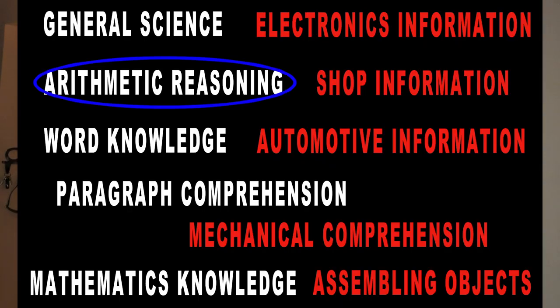If you're wondering what that means — there are 10 sections that make up the ASVAB. Your AR is your arithmetic reasoning, and your WK is your word knowledge. Because if you think about it, as an MA you're going to be writing reports. Those are the two components out of the 10 sections that you have to concentrate on to become an MA.